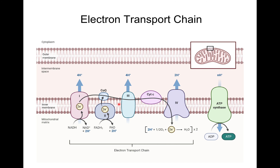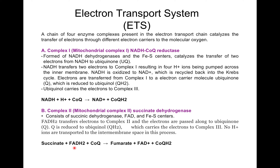Complex 2, mitochondrial complex 2, is succinate dehydrogenase. It consists of succinate dehydrogenase, FAD, and iron-sulfur centers. FADH2 transfers electrons to complex 2 and the electrons are passed along to ubiquinone. Q is reduced to ubiquinol (QH2), which carries electrons to complex 3. In complex 2, no H⁺ ions are transported to the intermembrane space. The reaction is: succinate + FAD + coenzyme Q → fumarate + FADH2 + coenzyme QH2.